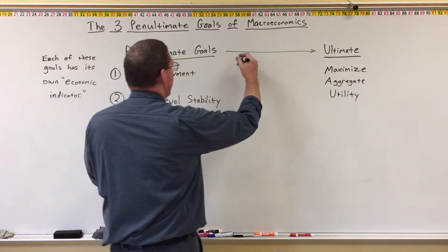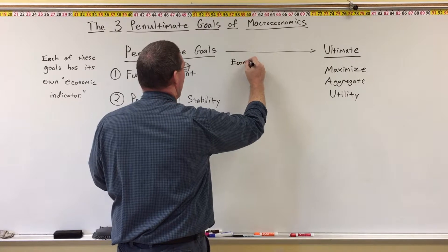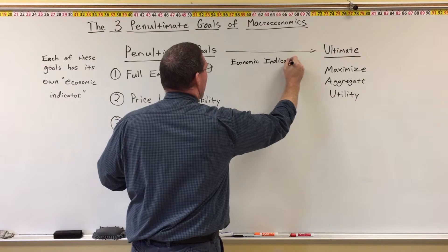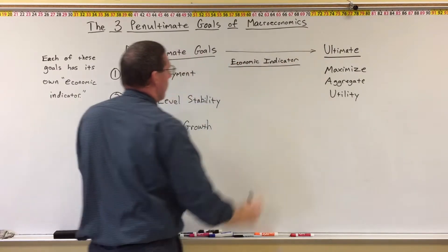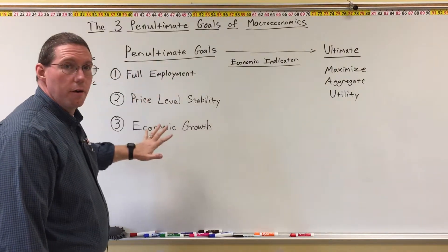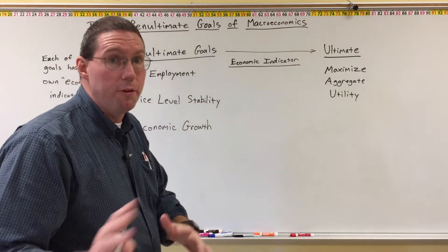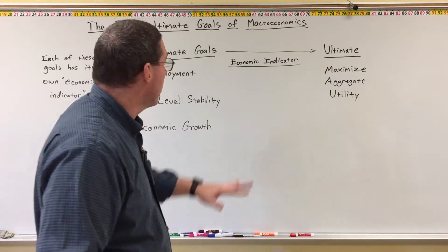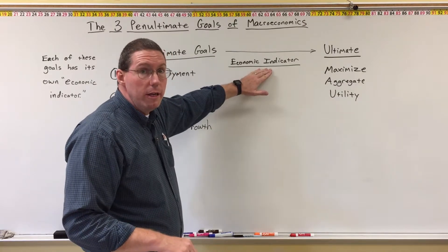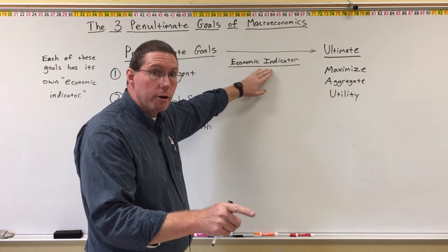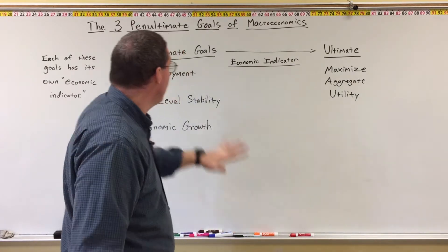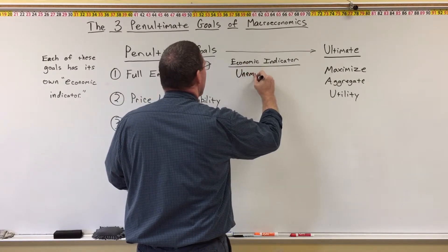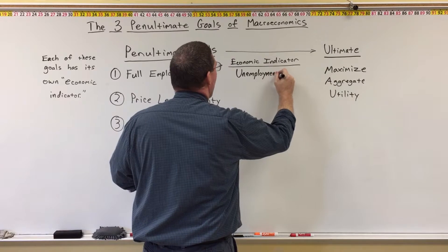An economic indicator is a concrete mathematical calculation that shows whether we are achieving the goal that it's assigned to. I'm going to write the economic indicators here. The economic indicator for full employment — for example, in the United States — is one particular mathematical indicator that tells us how well we are doing at achieving full employment, and it is called the unemployment rate.